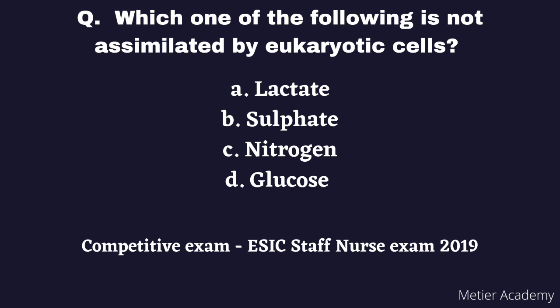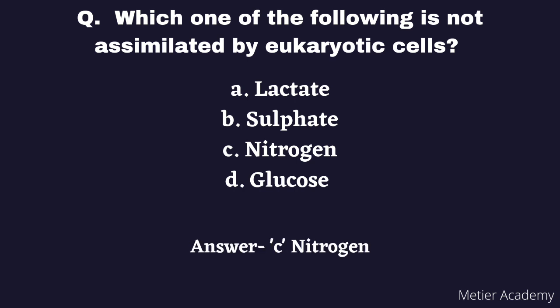The next question is: Which one of the following is not assimilated by eukaryotic cells? Note the word 'not assimilated.' Options are: A) Lactate, B) Sulphate, C) Nitrogen, D) Glucose. This question was asked in the ESI Staff Nurse exam, 2019. The correct answer is Option C, Nitrogen.